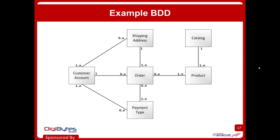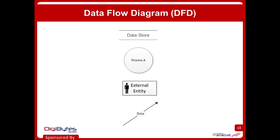Another question that might get asked: can a customer use multiple payment types for an order? That's the line from order down to payment type. Right now we're saying there has to be at least one payment type on every order, but there could be more than one. That's the dot, dot, end part of the cardinality notation.